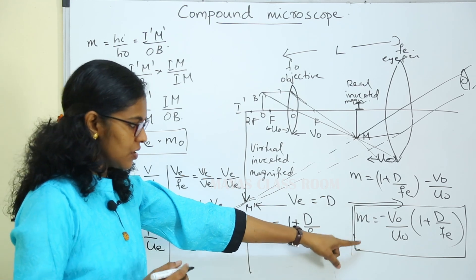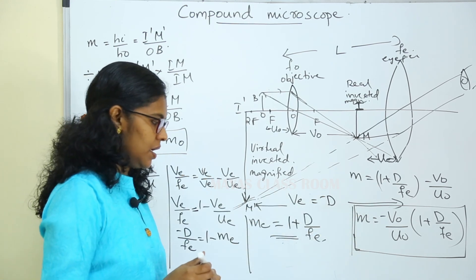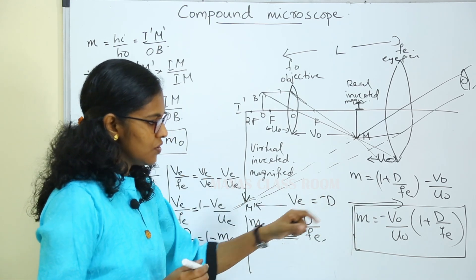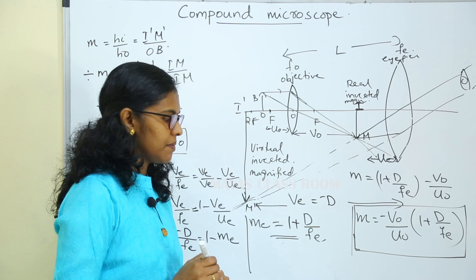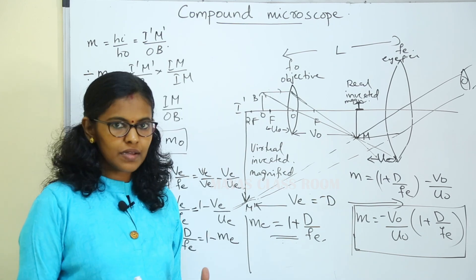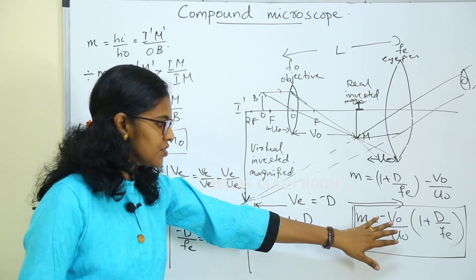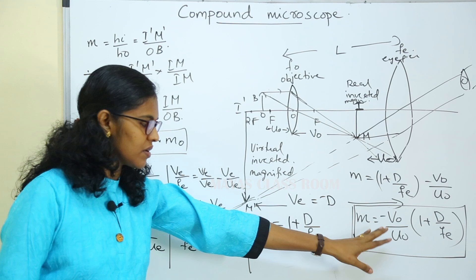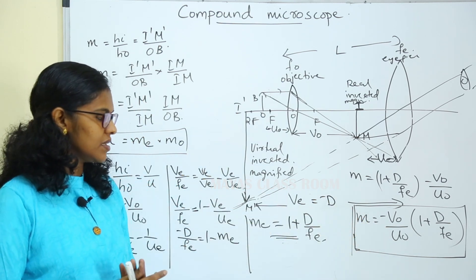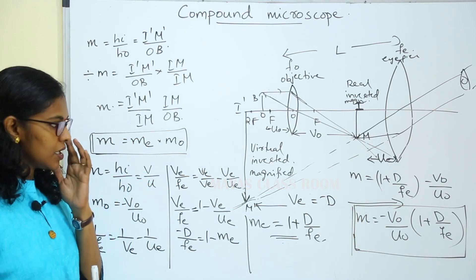Therefore, the total magnification of the compound microscope is M equals minus VO divided by UO into the quantity 1 plus D divided by FE.